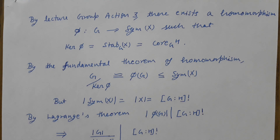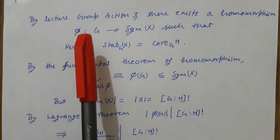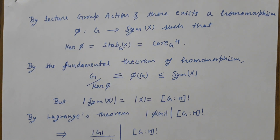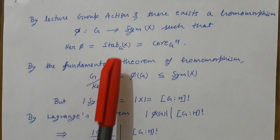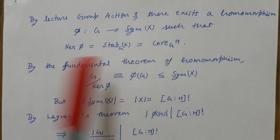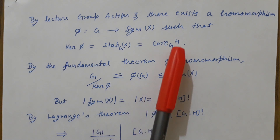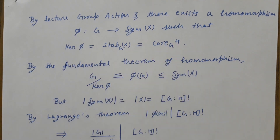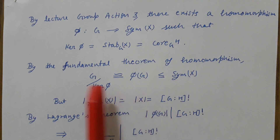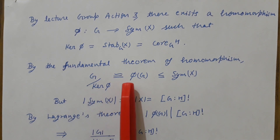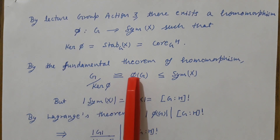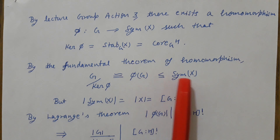In Lecture 3, Group Action 3, we showed that if there is an action then there is a homomorphism φ from G to Sym(X), and the kernel of φ equals the stabilizer of the action. Here the stabilizer is the core of H in G, so kernel of φ is core of H in G. By the fundamental theorem of group homomorphisms, G modulo kernel(φ) is isomorphic to φ(G), where φ(G) is a subgroup of Sym(X).